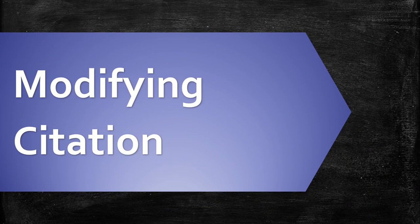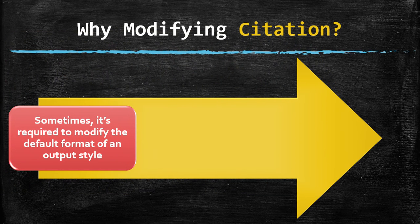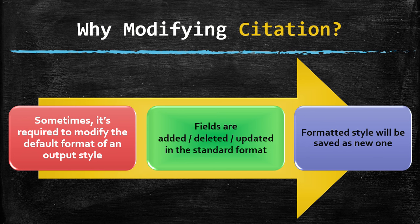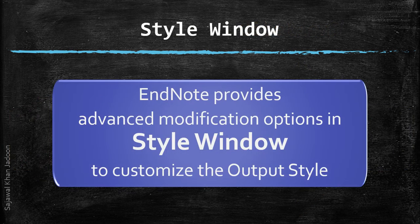Sometimes it is required to modify the default format of an output style. Fields are added, deleted, or updated in the standard format, and the formatted style is saved as a new style. EndNote provides advanced modification options in the style window to customize the output style.